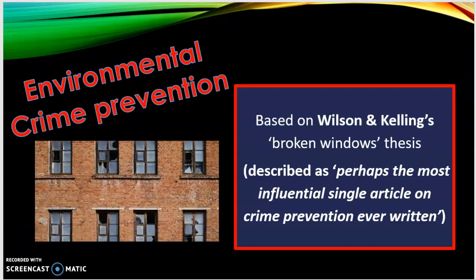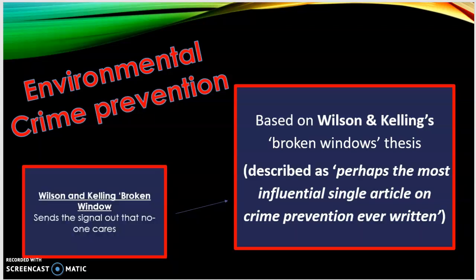Moving on to our second crime prevention strategy: environmental crime prevention, based on Wilson and Kelling's broken windows thesis. Broken windows signify signs of disorder and lack of concern — things like noise, graffiti, begging, littering, and vandalism. Leaving windows broken sends the signal that no one cares. In these areas there is a lack of formal social control, such as police, and informal social control from the wider community. Because police turn a blind eye, the community feels intimidated and powerless, and the area tips into a spiral of decline — good people move out and bad people move in.